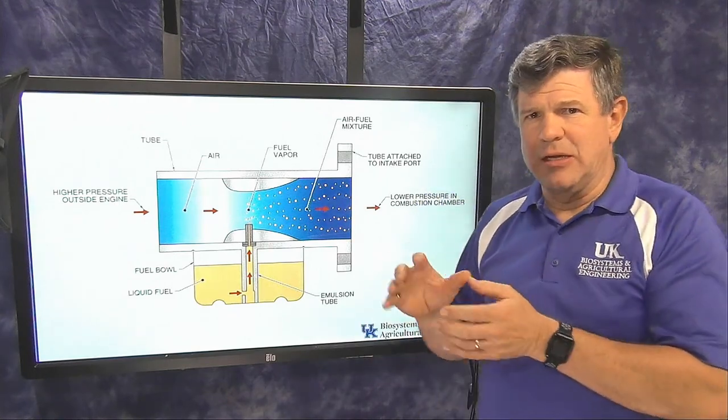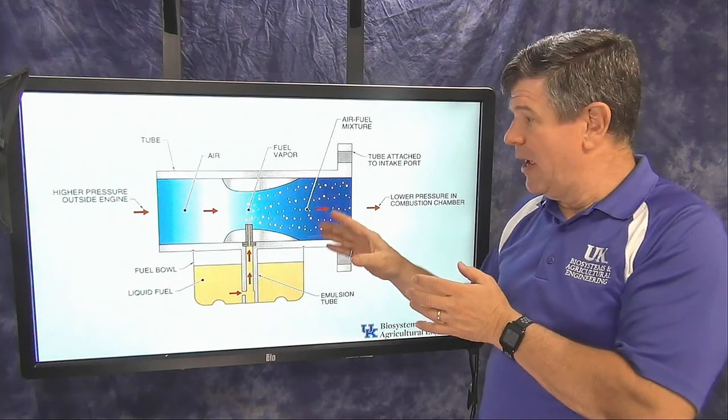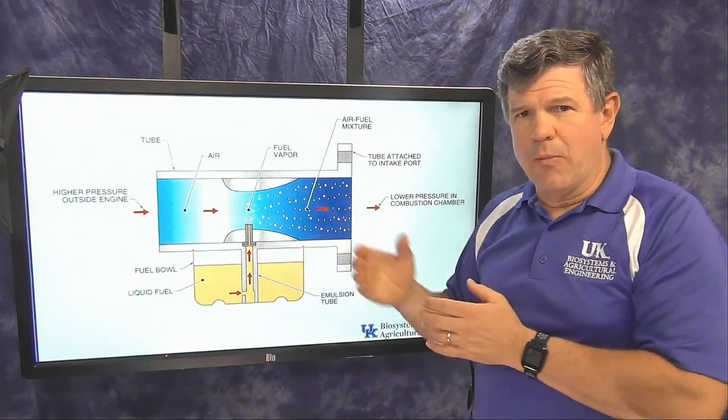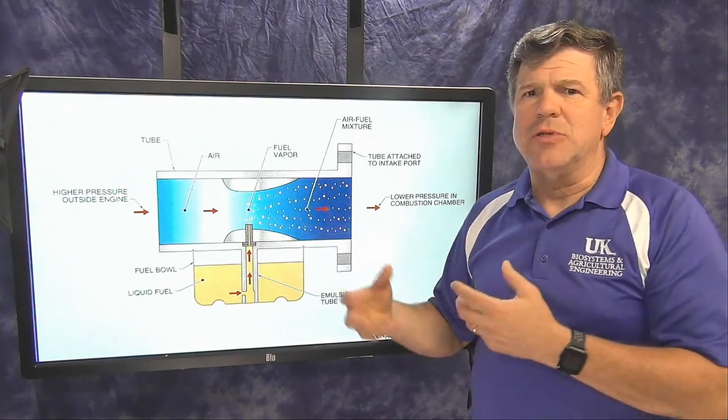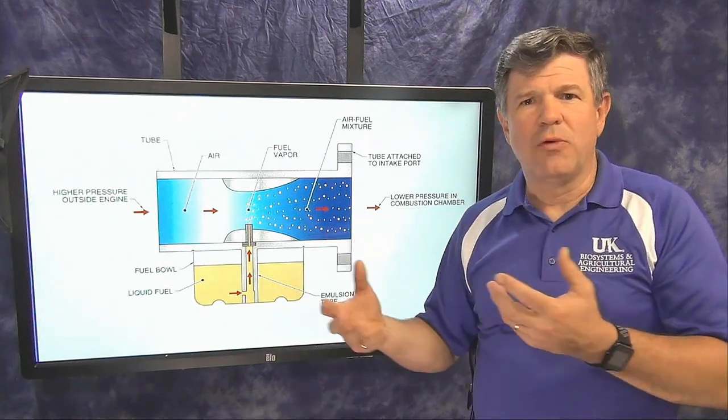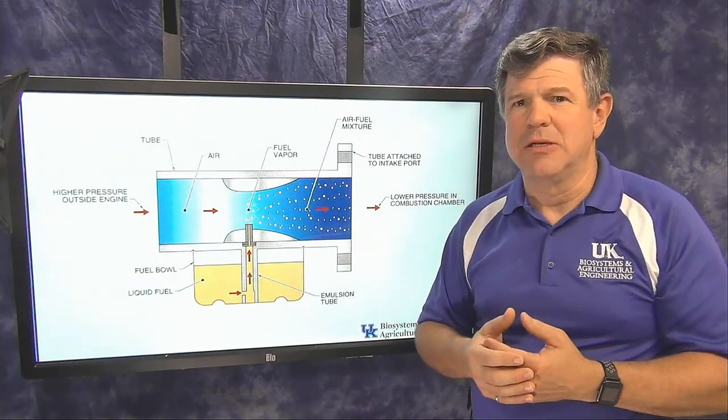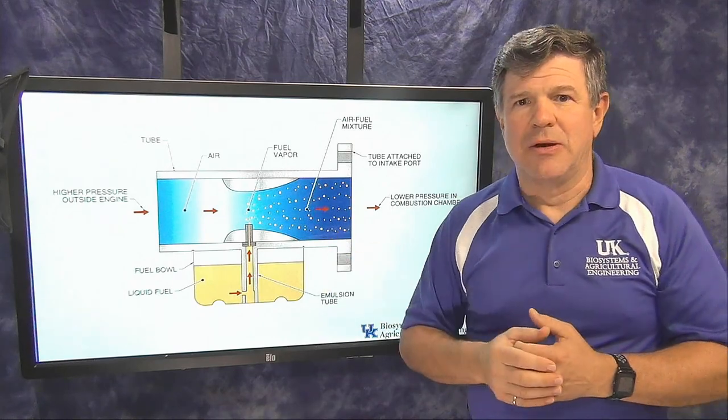The next thing we need to do is dig a little bit deeper—what all is going on in a carburetor? That's a basic principle, but there's a lot of other things going on in there to allow us to adjust the fuel flow rate, to control the speed of the engine, and so forth. That's what we're going to tear into next.